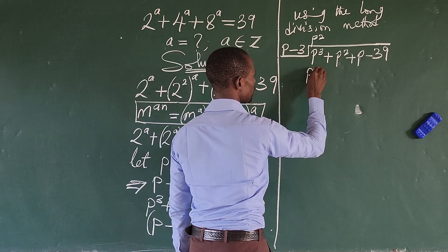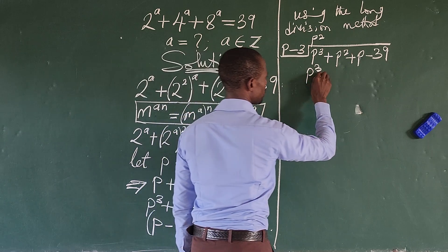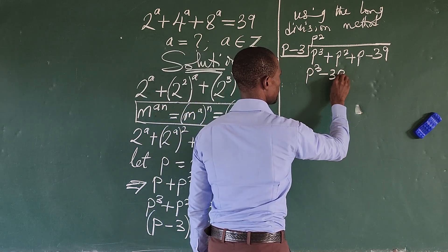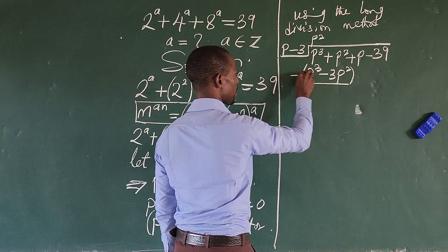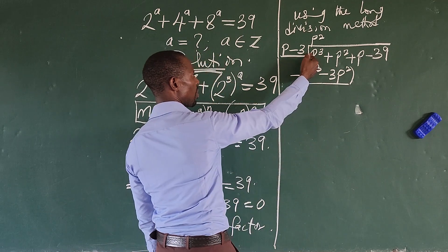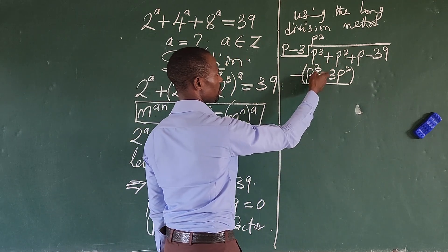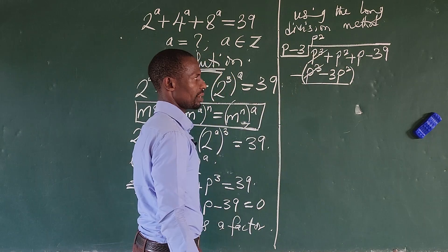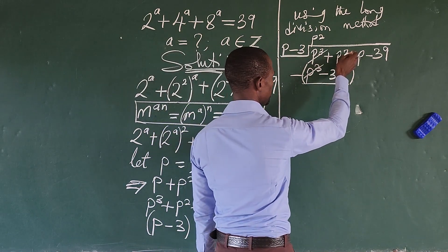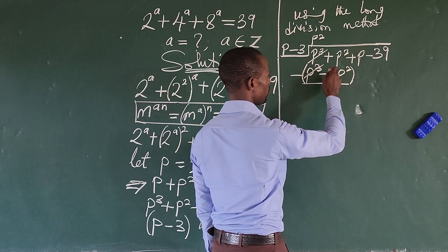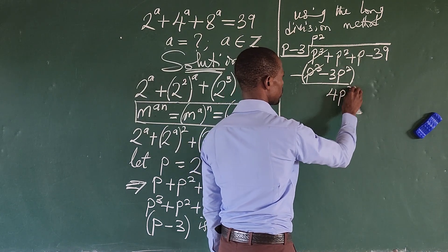We use this answer to multiply the divisor. So p squared times p gives us p to the power of 3. We also use p squared to multiply minus 3, which gives us minus 3p squared. Then we rule off and subtract. Plus p to the power of 3 minus p to the power of 3 leaves zero. Minus times minus gives us plus, so plus p squared plus 3p squared gives us 4p squared. We bring down the next term, which is plus p.